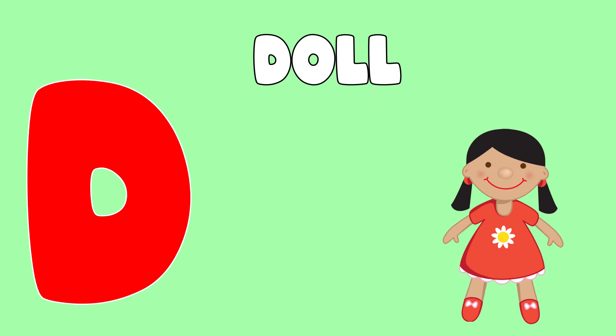I is for igloo. I, igloo. J is for jump. J, jump. K is for kangaroo. K, kangaroo. L is for lion. L, lion.